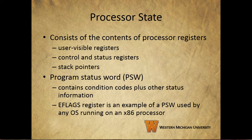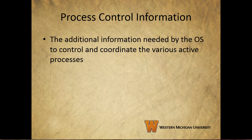It's important to note that all processor designs include a register or set of registers often known as the program status word that contains status information. The PSW typically contains condition codes plus other status information. A good example of this is the eFlags register, which is used by any operating system running on an x86 processor. You can refer to your book for an example of how the eFlags register is laid out and what kind of information it contains. Process control information simply indicates additional information needed by the operating system to control and coordinate various active processes, as covered in Table 3.5 in your book.